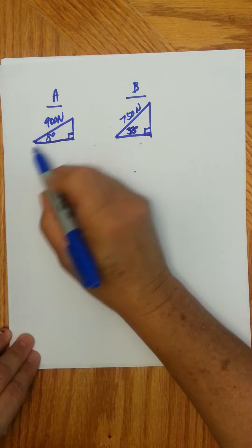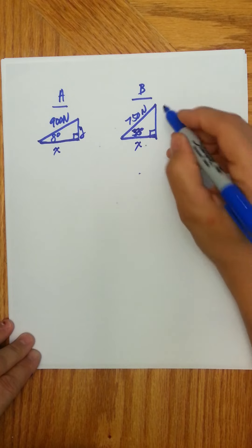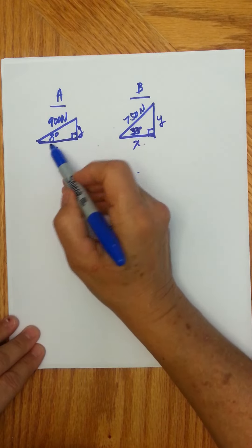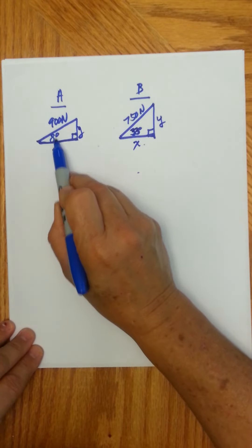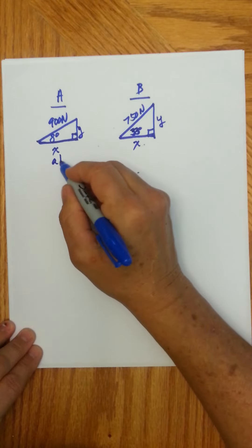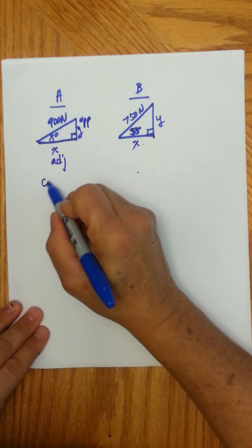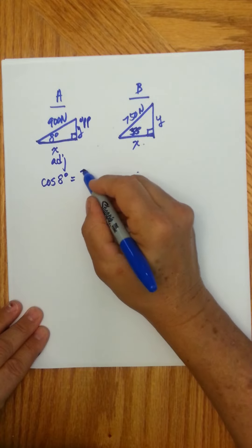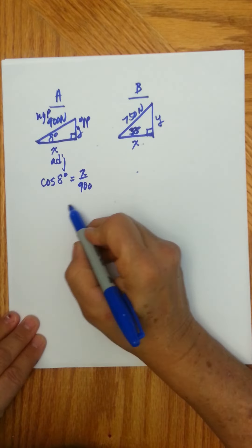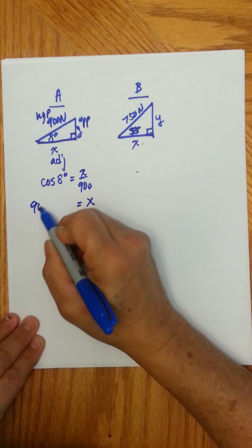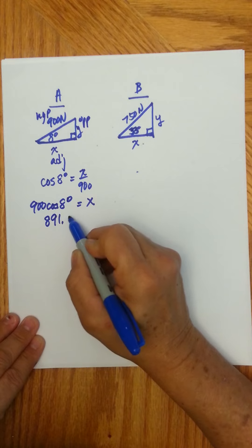So if we resolve this, then we have the horizontal component x and the vertical component y for each force. The x component is the adjacent side relative to the 8 degrees, and we can say cosine of 8 degrees equals x over 900, where 900 is the hypotenuse. So when we solve for x, we get 900 cosine of 8 degrees, and that gives us 891.24 newtons.